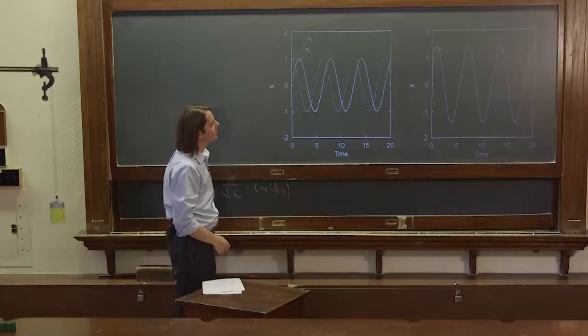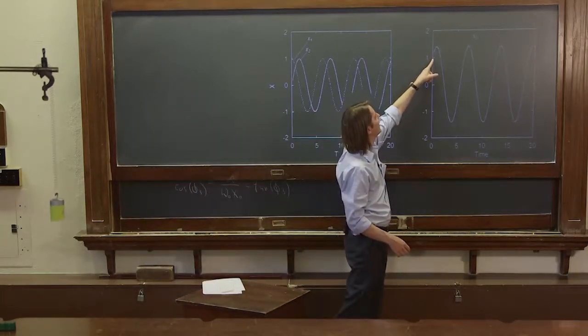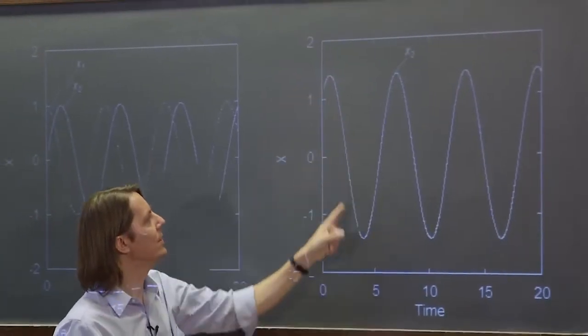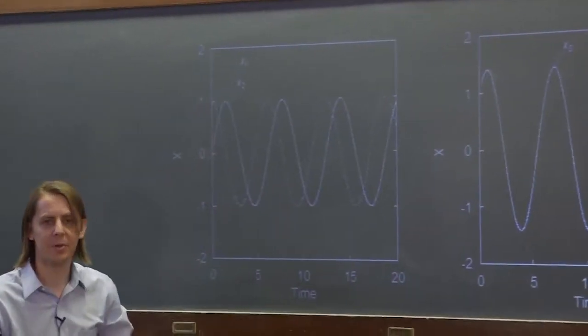And here is x3. And everything makes sense here for x3. It looks right. It had an offset. We pushed it a little bit. Then it comes down. That gets it out of phase, the amplitude's bigger. Everything looks fine.